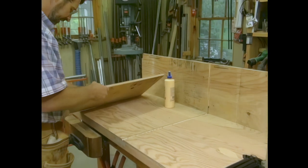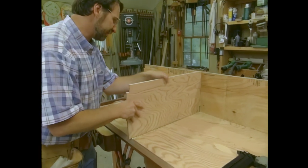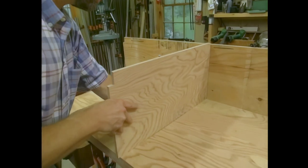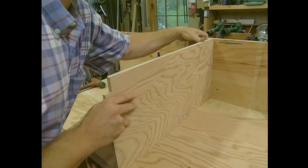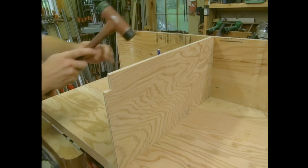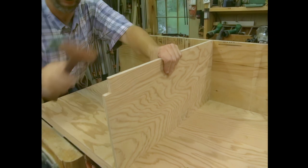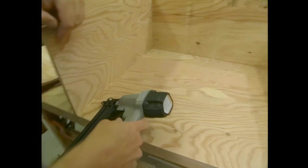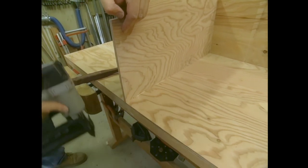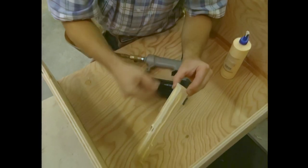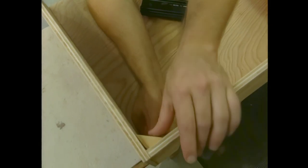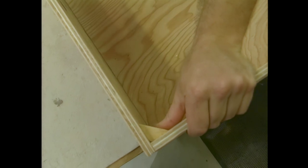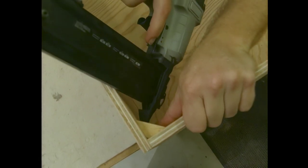Now this intermediate partition just gets set in the dados where I've already installed some glue. I'll set it in position and attach it with a few more brads. Now I can install the glue block to reinforce that corner. Just set it in place and tack it with some brads.